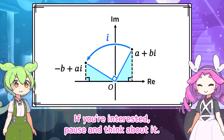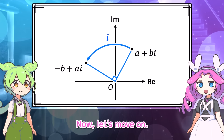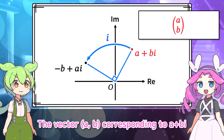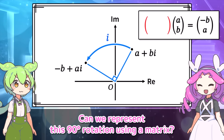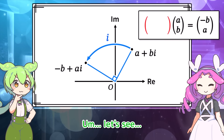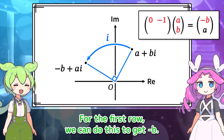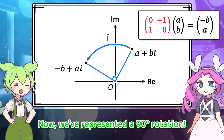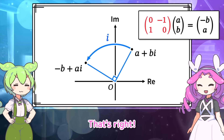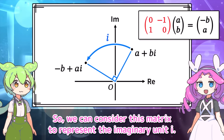This holds true for any complex number. Multiplying A plus BI by I gives negative B plus AI. You can see this 90-degree rotation by considering right triangles. If you're interested, pause and think about it. The vector (A, B) corresponding to A plus BI rotates 90 degrees counterclockwise to (negative B, A). Can we represent this 90-degree rotation using a matrix? For the first row, we can do this to get negative B. For the second row, we get A. Now we've represented a 90-degree rotation.